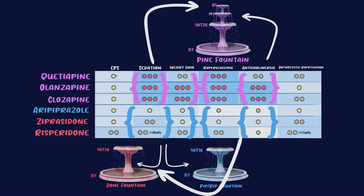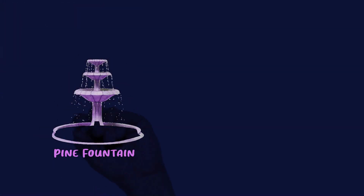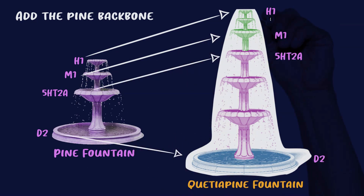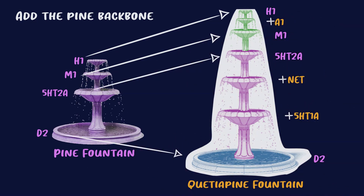Once you learn the concepts of the fountains, you'll eventually get the differences within subclasses. For a drug like Seroquel (quetiapine), take the pine fountain backbone and add the Seroquel-specific receptors: alpha-1, NET, and 5-HT1A. So it's really just the backbone with a few extra receptors. Since we're adding alpha-1, we know quetiapine has orthostatic hypotension. Since we've added NET, we know we'll get an antidepressant effect. This approach isn't perfect — it won't explain every property — but it's really helpful for organizing the differences between drugs.